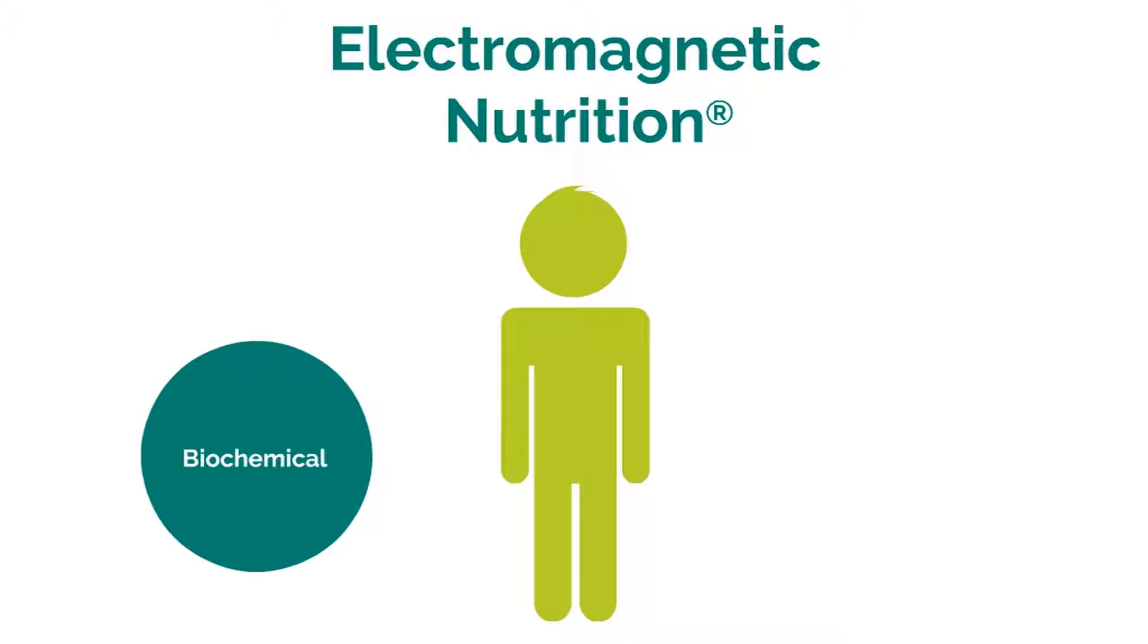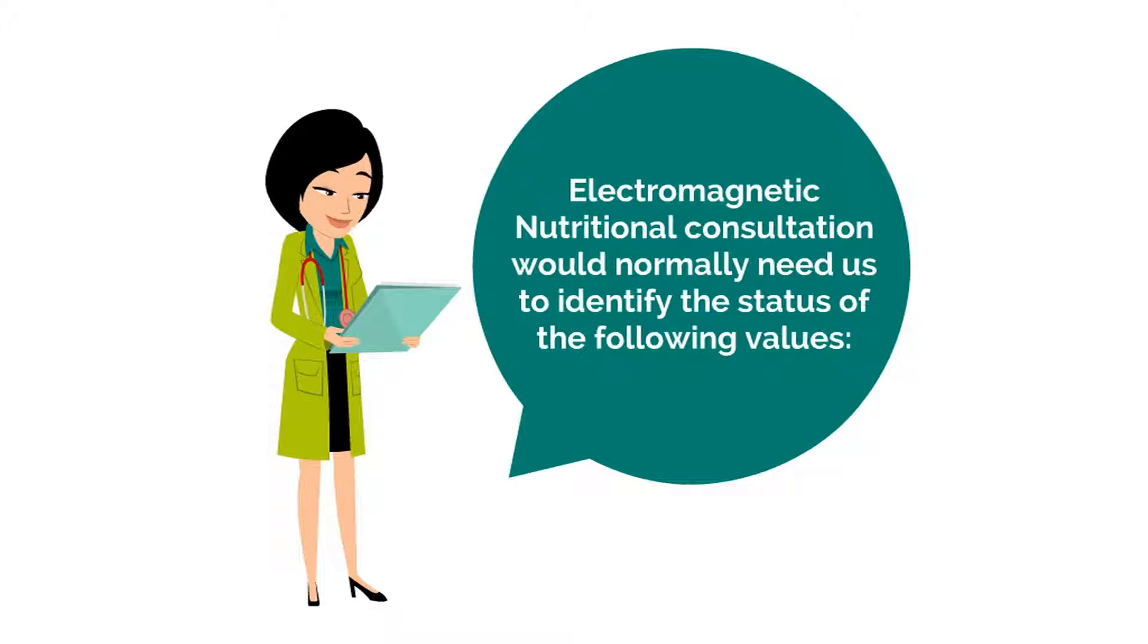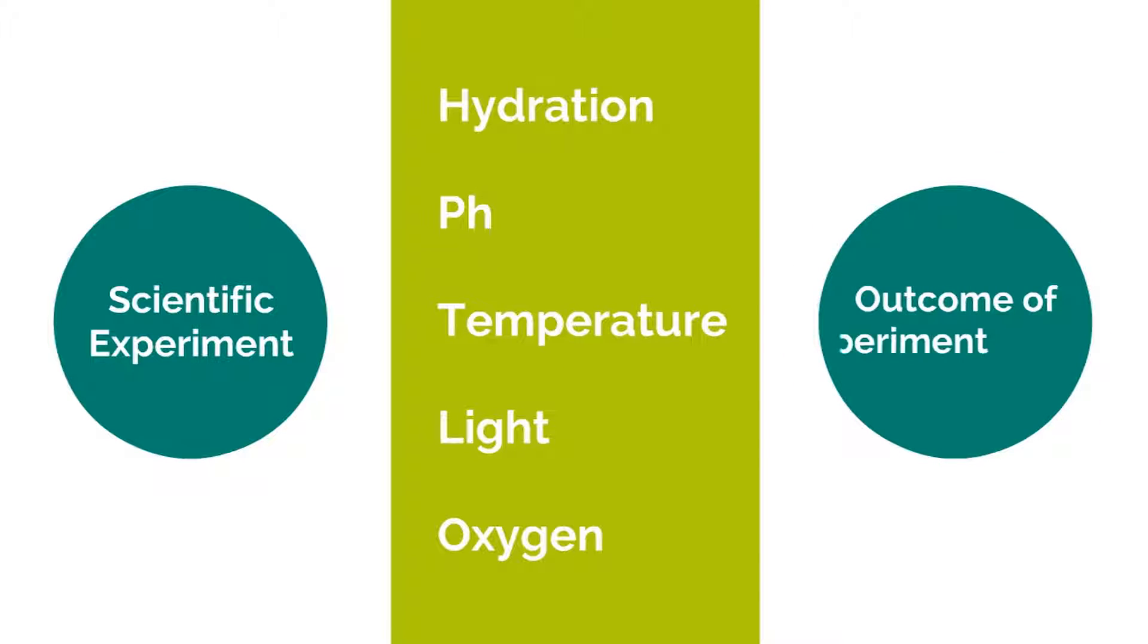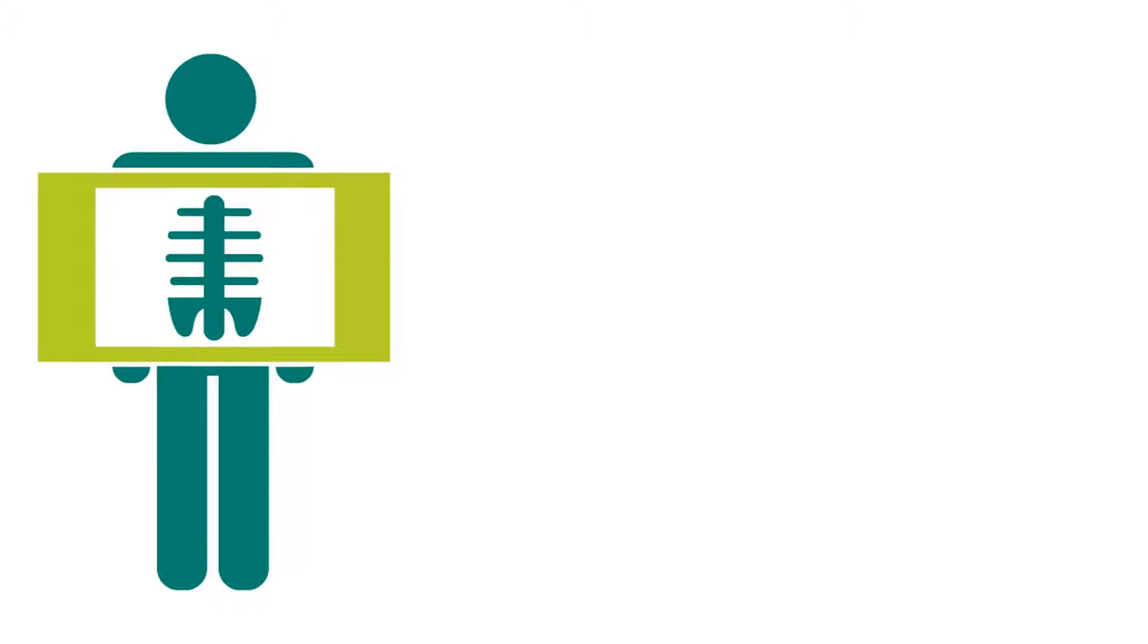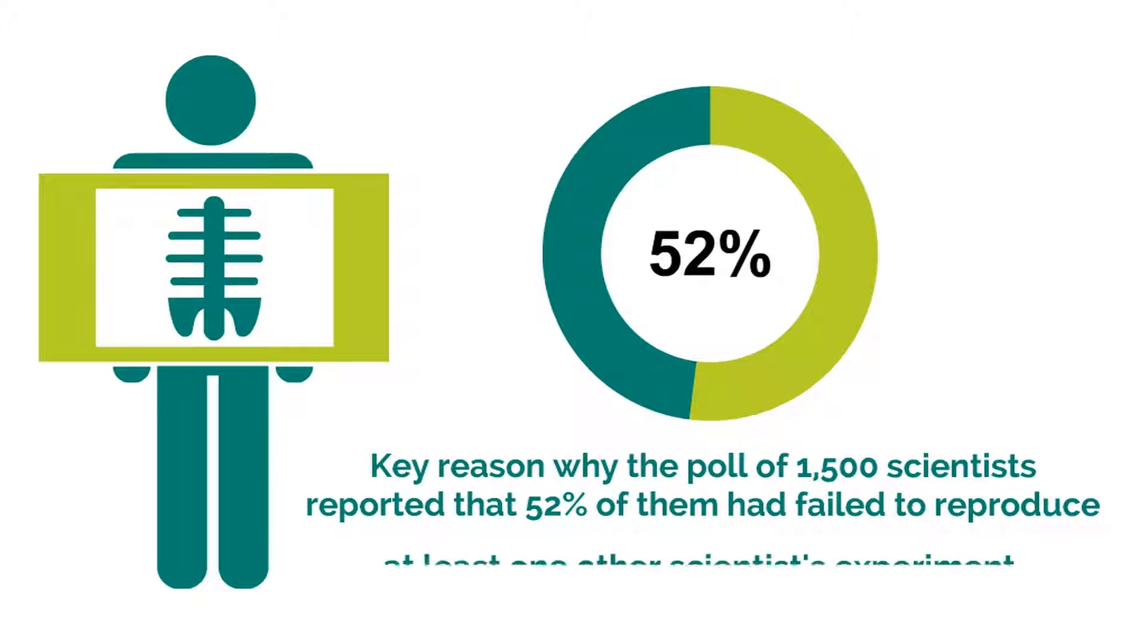We believe that when employing an understanding of electromagnetic nutrition, we need to be able to assess both the biochemical and electromagnetic needs of the body. Therefore, we believe that an electromagnetic nutritional consultation would normally need us to identify the status of the following values. When setting up any scientific experiment, one would normally want to evaluate the levels of hydration, pH, temperature, light availability and oxygen of the environment one was wanting to conduct the experiment within, which in turn would determine the outcome of the experiment. This is no different within the human body and must be a key reason why the poll of 1500 scientists reported that 52% of them had failed to reproduce at least one other scientist's experiment.